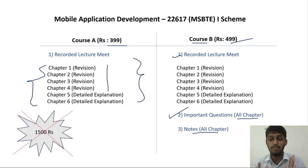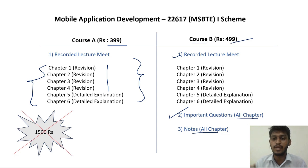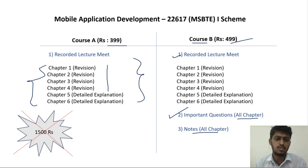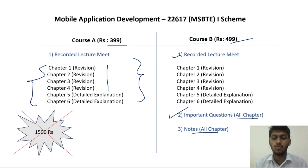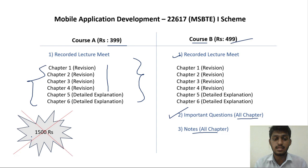This will be very useful if you take the 499 option. Or you can choose just the recorded lectures for 399. The total course price is 1500.